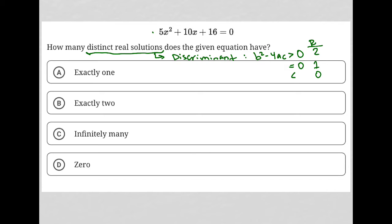So this is my list of the number of real solutions we'll have. All I really need to do is figure out what this ends up equaling. I have this quadratic equation where 5 is the a value, 10 is the b value, and 16 is the c value.